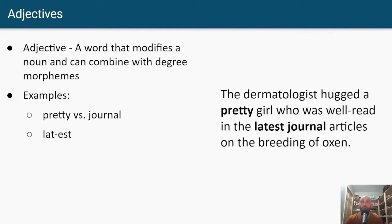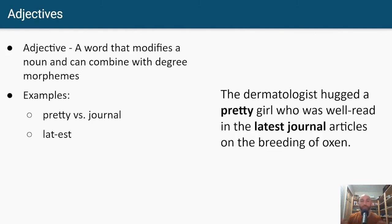The examples in our sentence are 'pretty' (the dermatologist hugged a pretty girl) and 'latest' (who was well-read in the latest journal articles on the breeding of oxen) — 'latest' is also an adjective. One point to bring up: in English, nouns can also modify other nouns. 'Journal articles' — the word 'journal' is modifying the noun 'article', just like 'pretty' is modifying 'girl'. There might be differences between the two, but on the surface it looks like nouns can modify other nouns in English in some cases. Degree morphology, like the EST suffix (superlative) — 'prettiest', 'latest' — or comparatives like 'prettier', 'later' — these normally combine with adjectives.